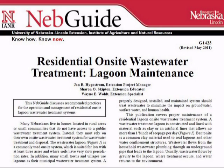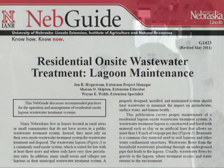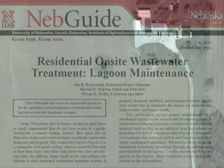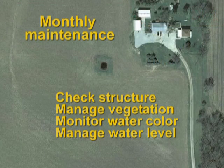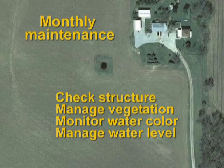Proper lagoon maintenance is critical to keep the system functioning efficiently. This protects human health and the environment. In addition, it delays the need to repair or replace a system, thereby saving the owner money. Monthly maintenance includes checking and repairing the lagoon structure, managing vegetation in and around the lagoon, monitoring water color, and managing the water level.